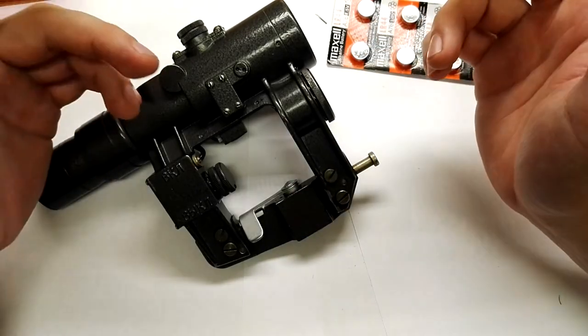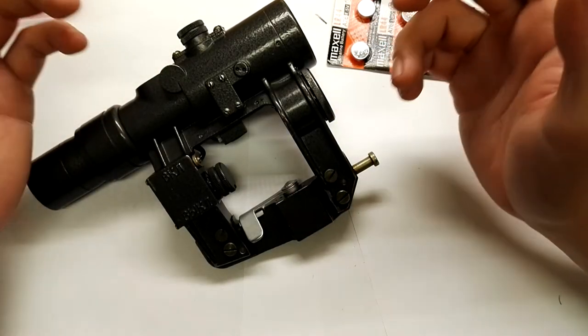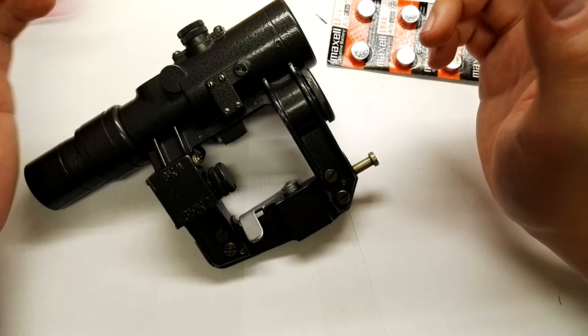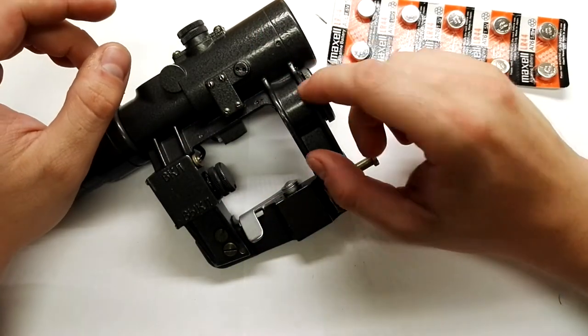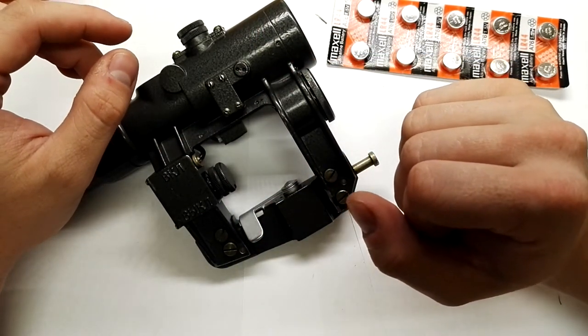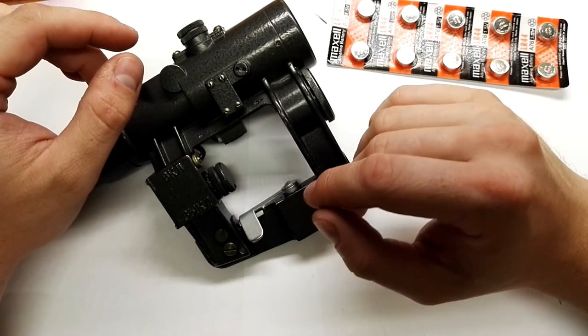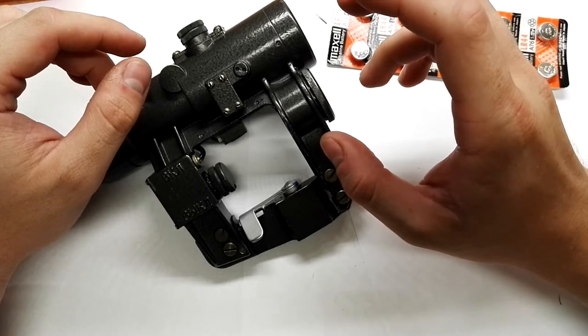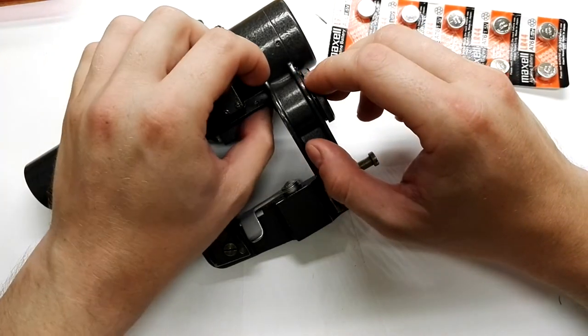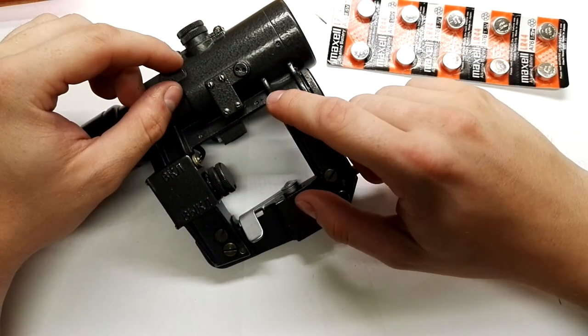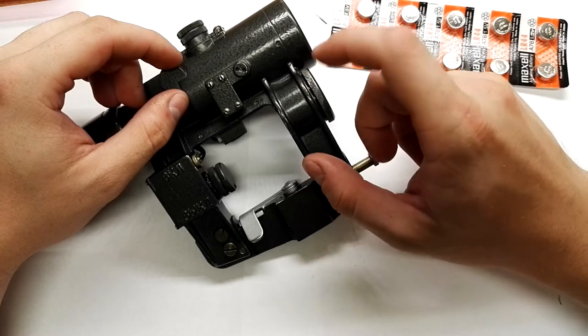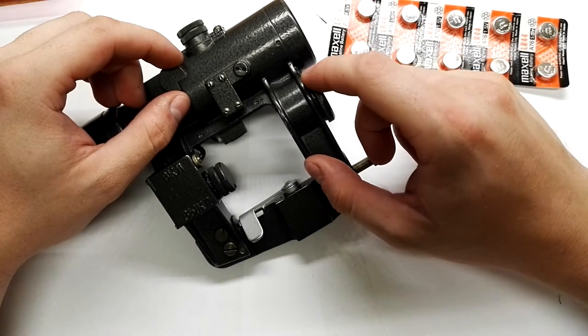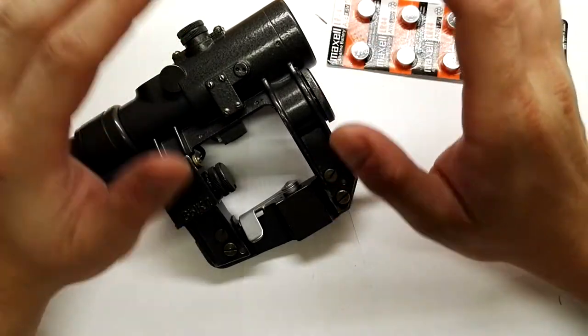This is not the case with this Soviet scope. On the upgraded version it's totally different electronics, but on this old design the power consumption is really high. But I can say I have these batteries from last year - almost one and a half years - and the batteries are still quite strong.